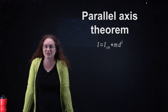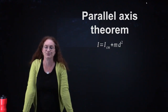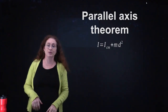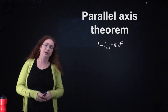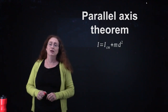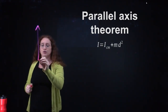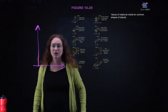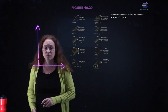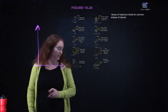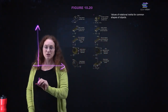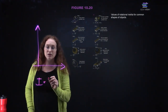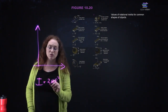If you have an object and you are rotating it about something other than its own center of mass, you can calculate what its moment of inertia is using the parallel axis theorem. For example, for a solid sphere rotating about its center, the moment of inertia is 2mr²/5.